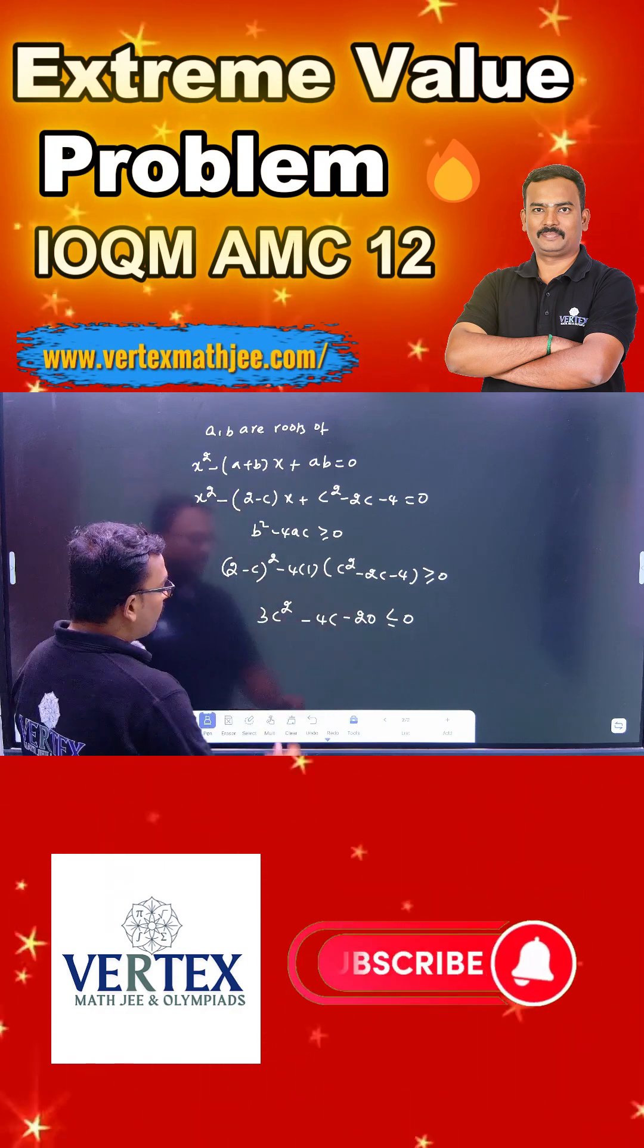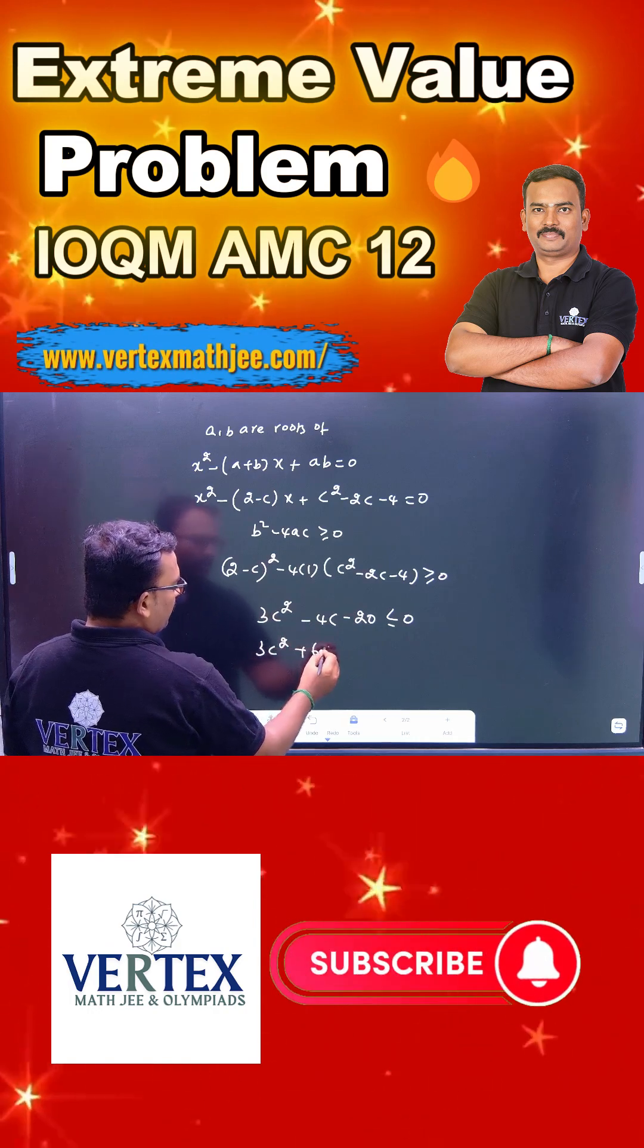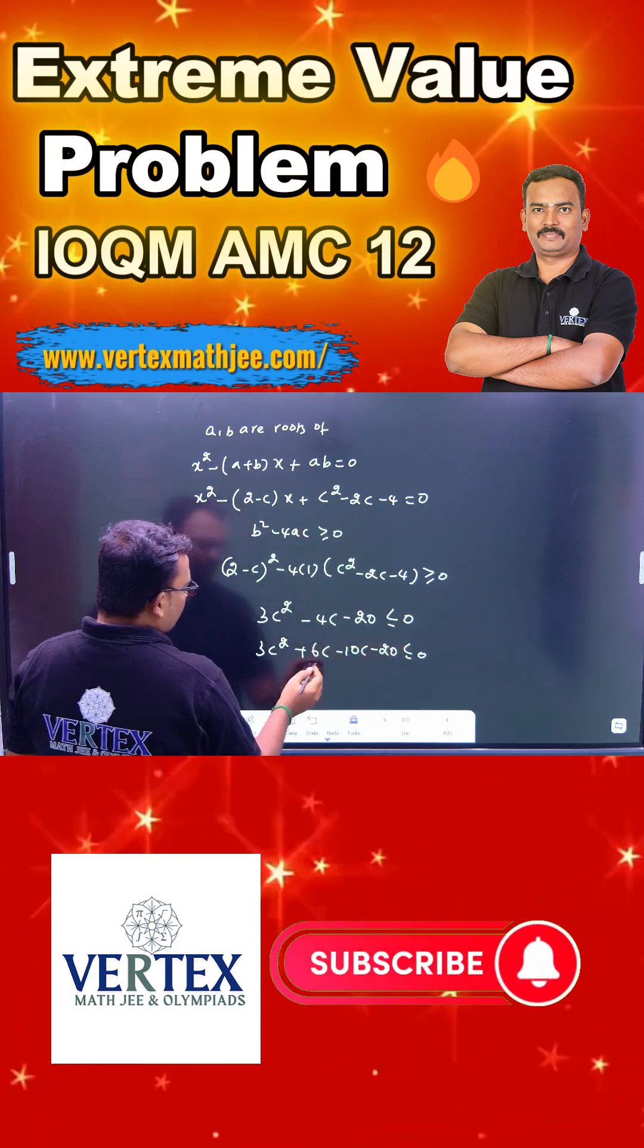Now we need the product is minus 60, sum is minus 4. Then how to rewrite this? 3c squared, so plus 6c minus 10c you can write, minus 20 less than or equal to 0.